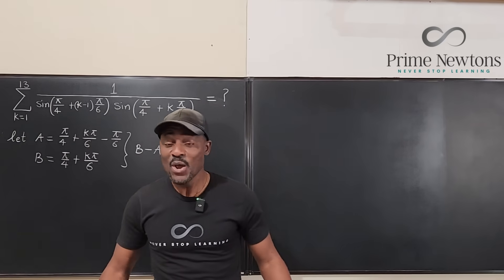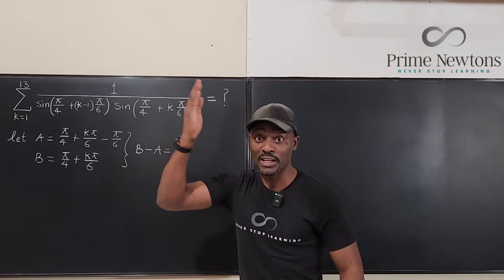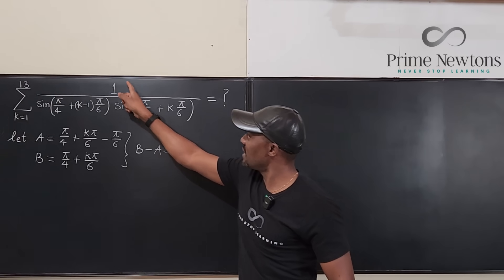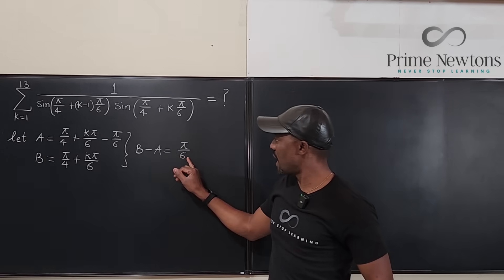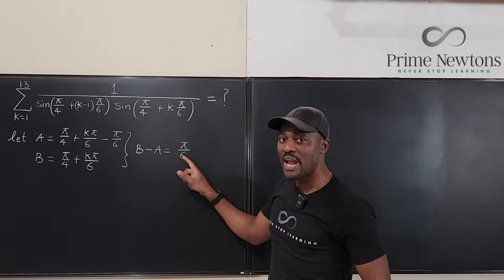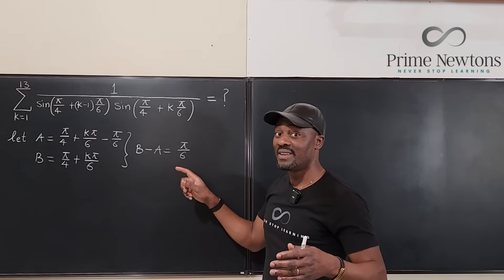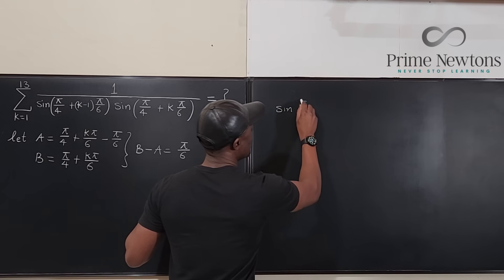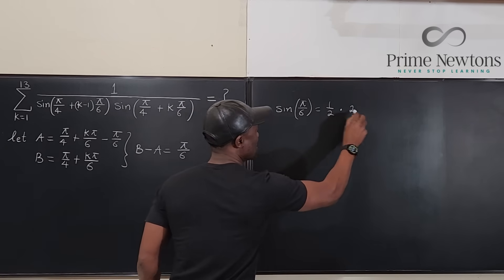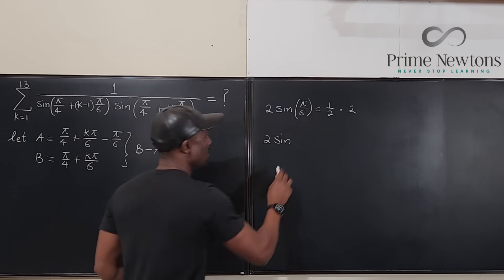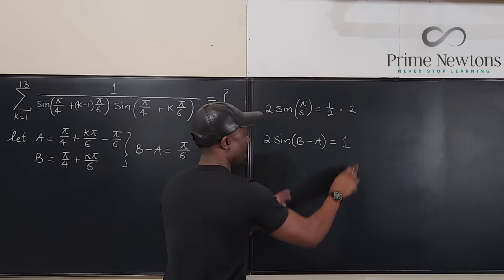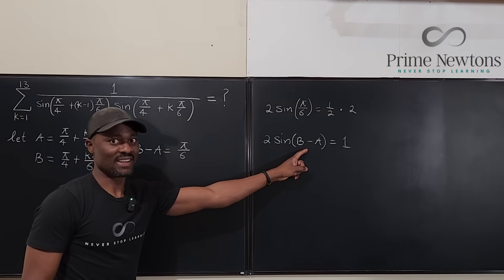Now, to split this into a sum or difference I need to replace the numerator. I can't use sine 90° because the argument is π/6, not π/2. But I know that sin(π/6) = 1/2, so if I multiply by 2 I get 1. That means I can write: 2·sin(b − a) = 1, since π/6 is b − a. So I replace the 1 in the numerator with 2·sin(b − a).